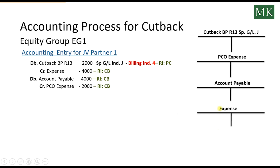For the joint venture partner share, all expense accounts, accounts payable and receivable, and revenues posted with recovery indicator BI on the joint venture will be credited or debited as per the joint venture equity share with recovery indicator CB. The remaining difference is posted to the special GL account for joint venture partner cutback — business partner R13 — with billing indicator 4 and recovery indicator PC.